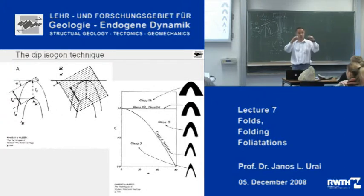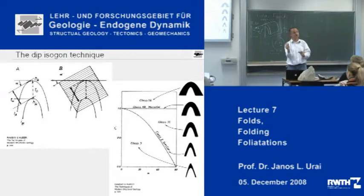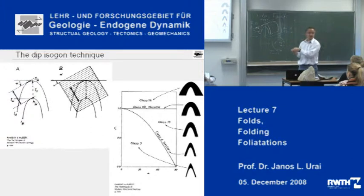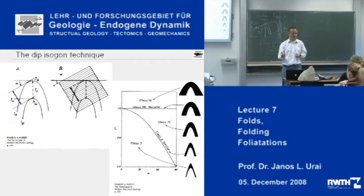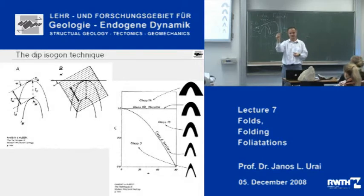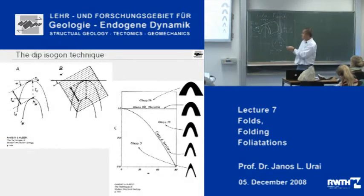The most simple case: if you would take your notebook and bend it just like this, everywhere the thickness is the same. So you get a horizontal line in your plot. These are called parallel or concentric folds. The thickness of the layer is everywhere the same. And this one here is a very interesting one.